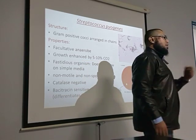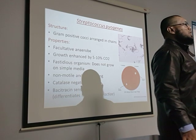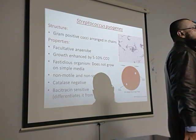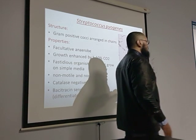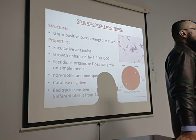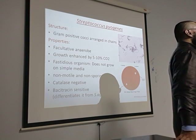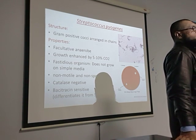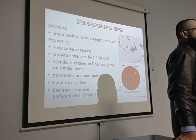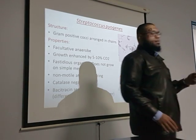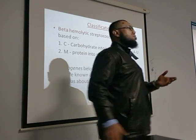Streptococcus pyogenes is beta-hemolytic. To differentiate between different beta-hemolytic streptococci, the bacitracin sensitivity test is used. Streptococcus pyogenes is sensitive to — inhibited by — bacitracin, whereas other beta-hemolytic streptococci such as S. agalactiae are resistant to bacitracin.